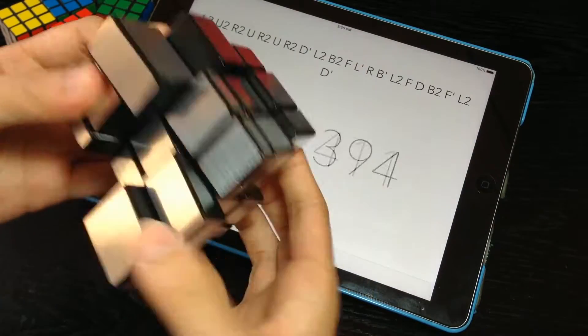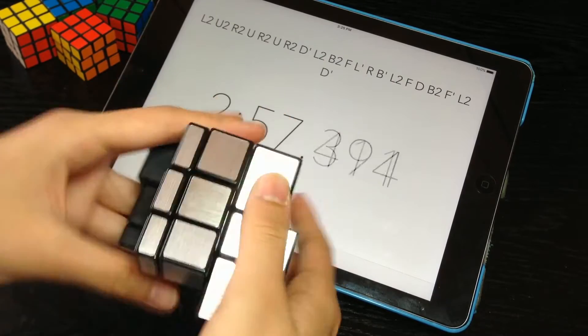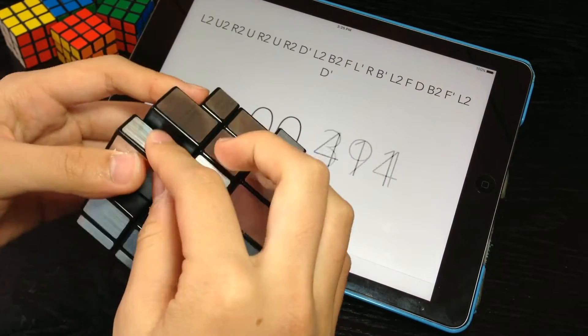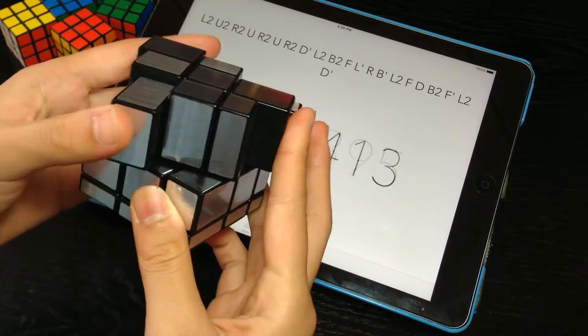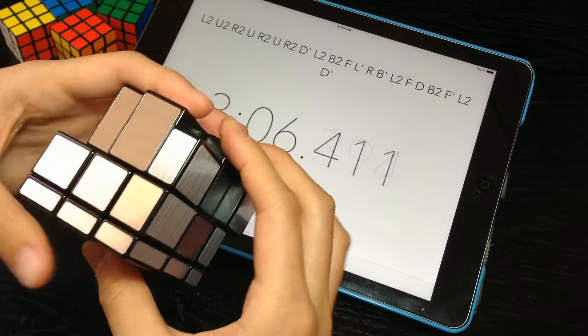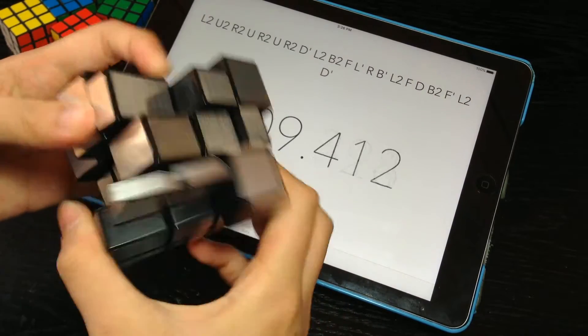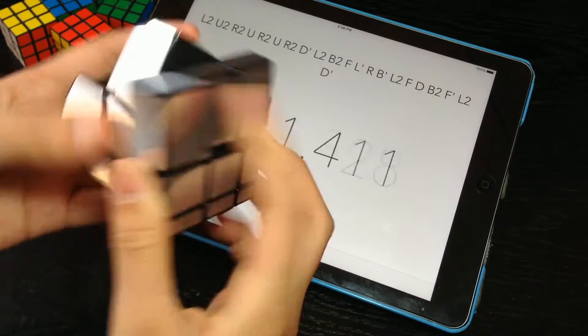So with all those three things considered I personally would think that the best world record to break is the 3x3 average. Yes the 3x3 single might get a little bit more attention but the average requires more skill in my opinion anyways and in terms of money they're both exactly the same.